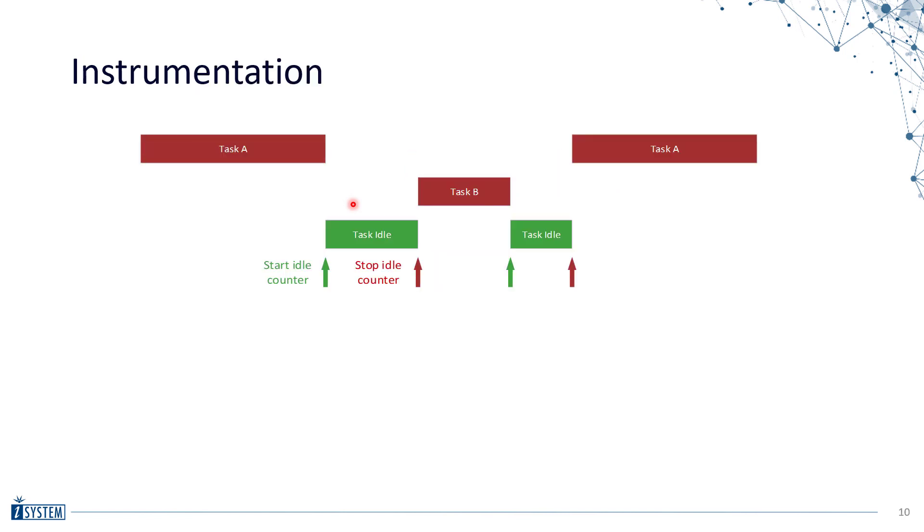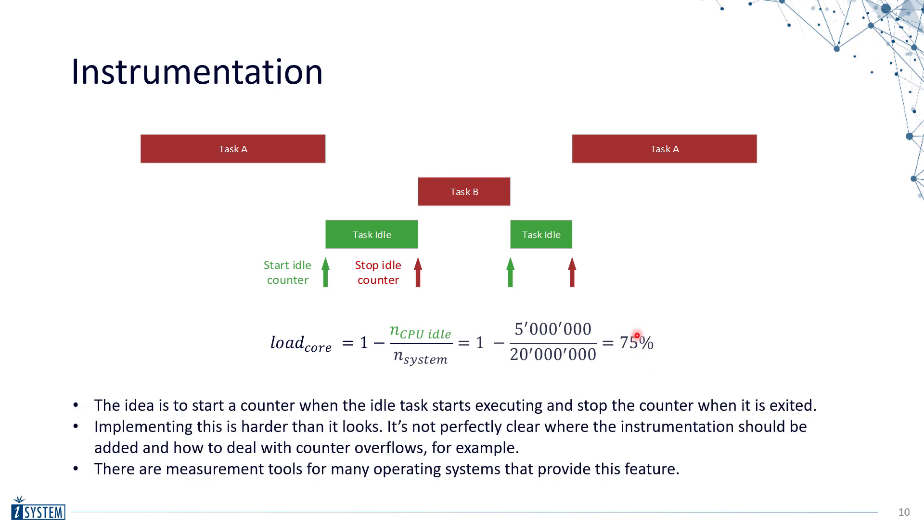Then next is instrumentation. The idea is that we add instrumentation to the point where the idle task starts and to the point where the idle task stops. We, for example, activate start and stop on an idle counter. Then by calculating the idle cycles divided by the total cycles, we get the load for that core. This might sound straightforward, but it's actually harder to implement than it looks. The main reason is where exactly does the idle task start and where exactly does it stop. You might have to use a pre-task hook to do this kind of instrumentation. You also have to deal with overflows of the counters. This is a viable approach and it is implemented by some operating systems, but it's probably not the best approach. And because you're using instrumentation, it generates an additional runtime overhead.